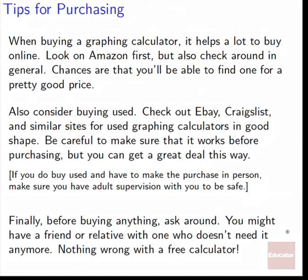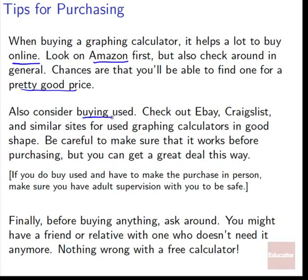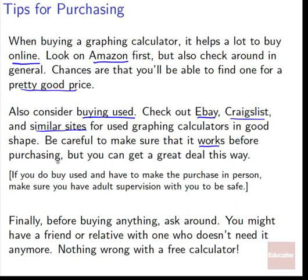Finally, some quick tips for purchasing. When buying a graphing calculator, it helps a lot to buy online. Start by looking at Amazon, but check around in general — chances are you'll find one for a pretty good price, normally 20–30% off what you'd pay in a physical store. Also consider buying used: a graphing calculator in reasonably good working shape is just as good as a new one. Check eBay, Craigslist, or similar sites and see if there are any in good shape — just make sure it works before you purchase.